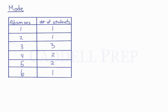So to find a mode it's probably the easiest to do from a table because the quantities are already here. For each of these absences we see how many times they show up. Well, three absences show up three times, that's more than any other absence, so the mode would be three.